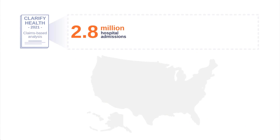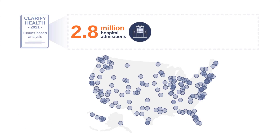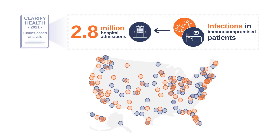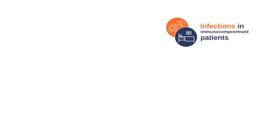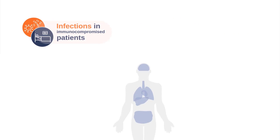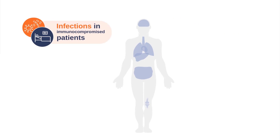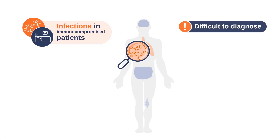Almost 2.8 million hospital admissions in 2021 in the U.S. were due to infections in immunocompromised patients. For these patients, infectious diseases, particularly respiratory infections, can be challenging to diagnose.